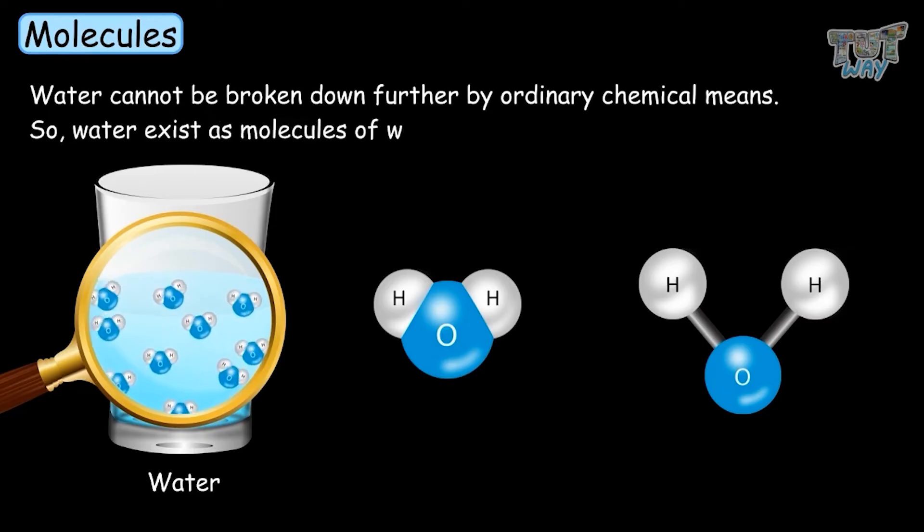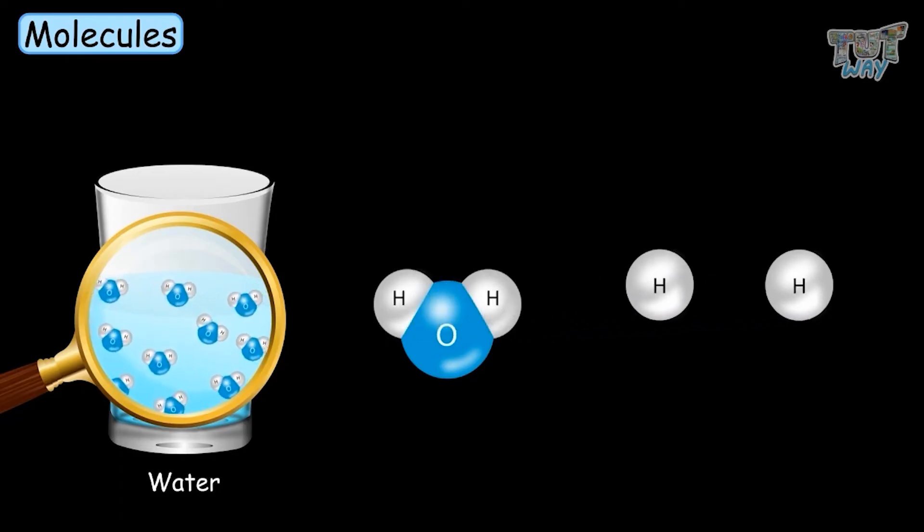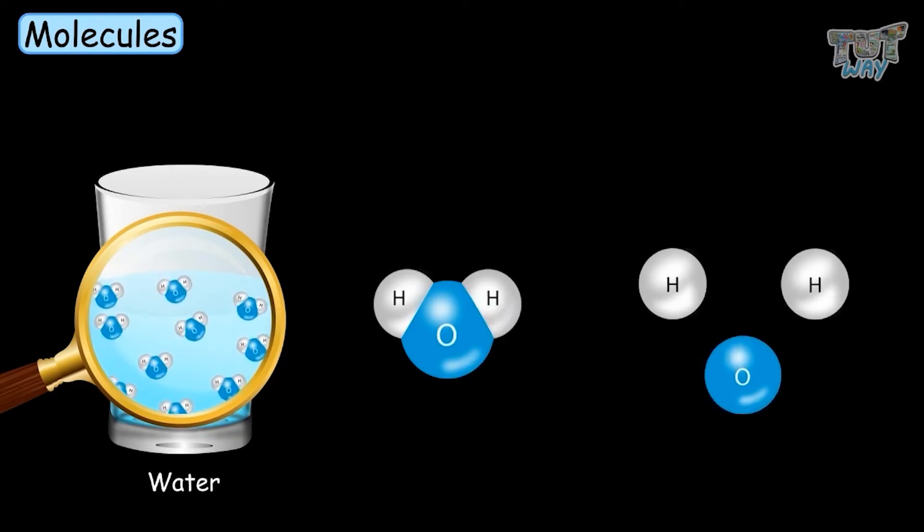So water exists as molecules of water. Each molecule has two types of atoms, hydrogen and oxygen. Two types of hydrogen and one atom of oxygen.